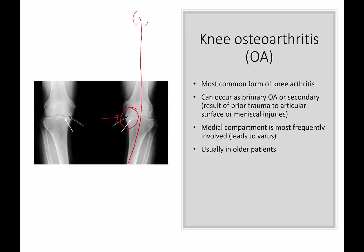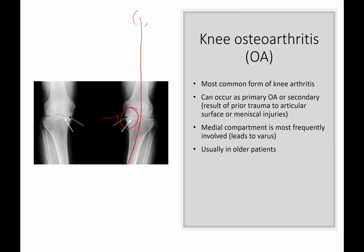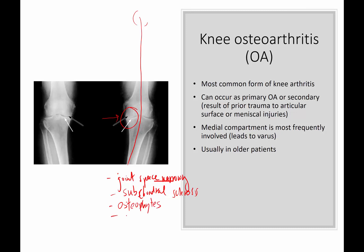This usually occurs in older patients. There are hallmark findings you should look for on radiograph — primarily four things: joint space narrowing, subchondral sclerosis, osteophytes (those bone spurs), and subchondral cysts, which are little things that can develop in the subchondral bone. Those are the key radiographic findings of osteoarthritis, and when it becomes moderate to advanced, it is very easily diagnosed on radiograph.